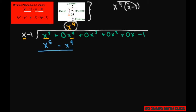Then we subtract. I put this in parentheses because I know I'm subtracting both terms. x to the fifth divided by x to the fifth is 0. Then 0 minus a negative — when you hear 'minus a negative,' that means add — so this is going to be x to the fourth.